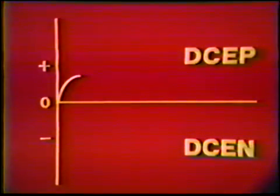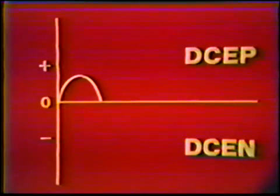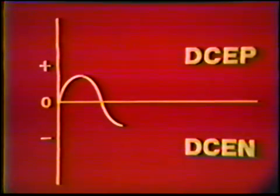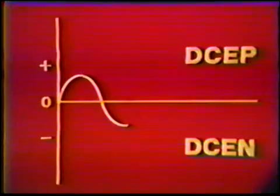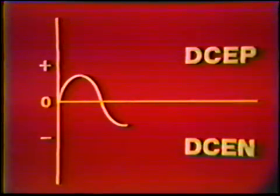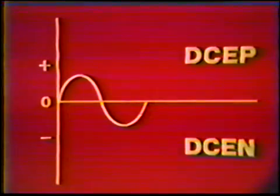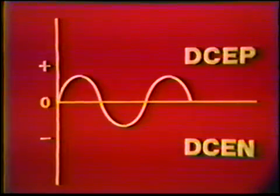For one-fourth of the cycle, the current goes from zero to maximum, with the polarity being electrode positive. The current then drops from maximum back to zero, and after this point, the polarity becomes electrode negative. The current again goes to a maximum value, this time with electrode negative polarity. From the maximum value, the current again goes to zero, and the cycle is repeated.